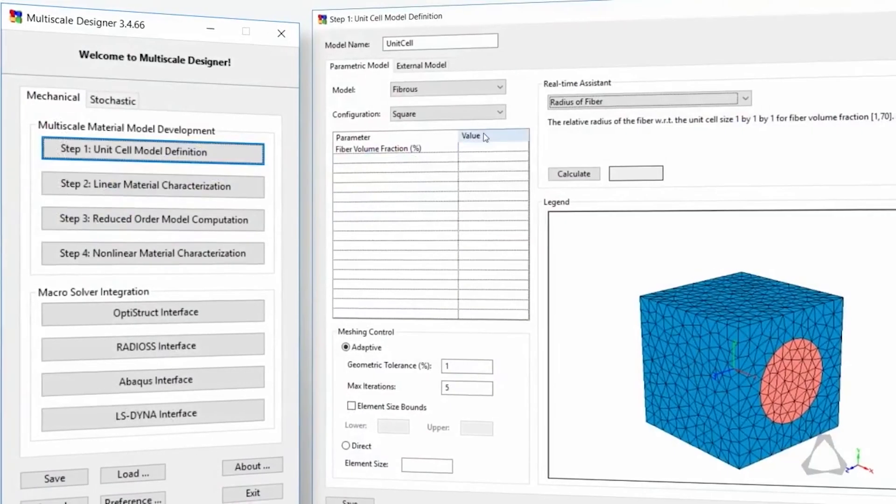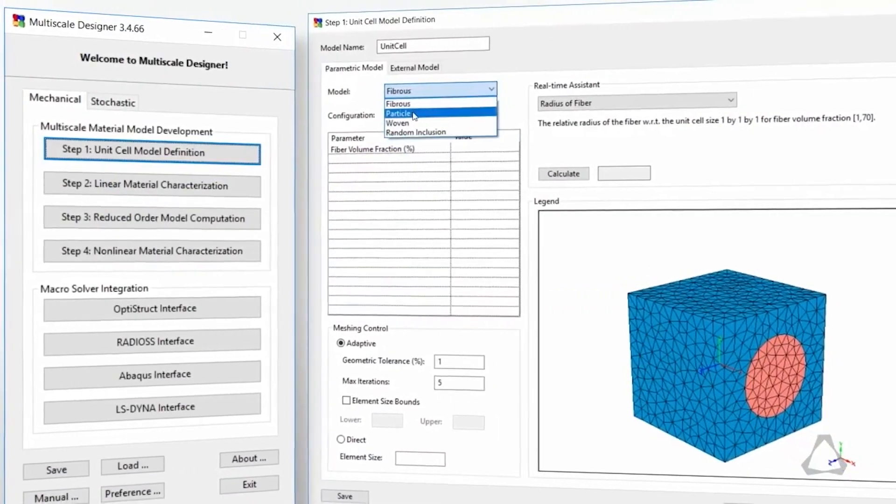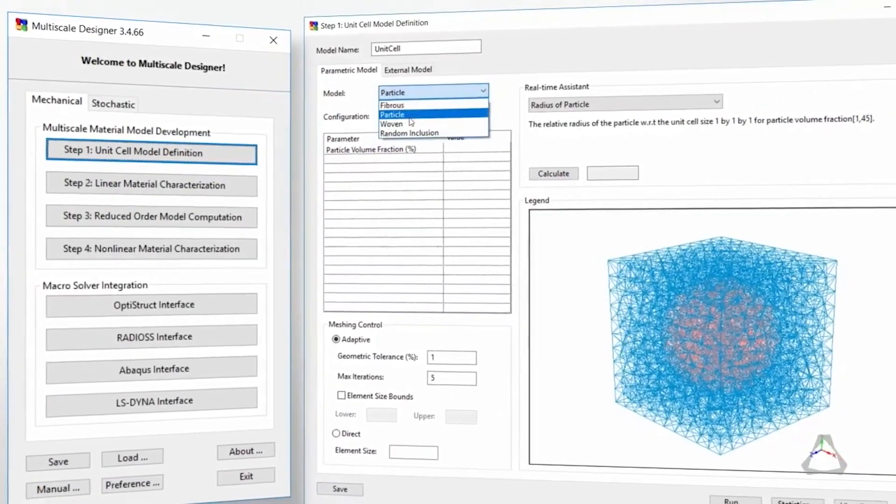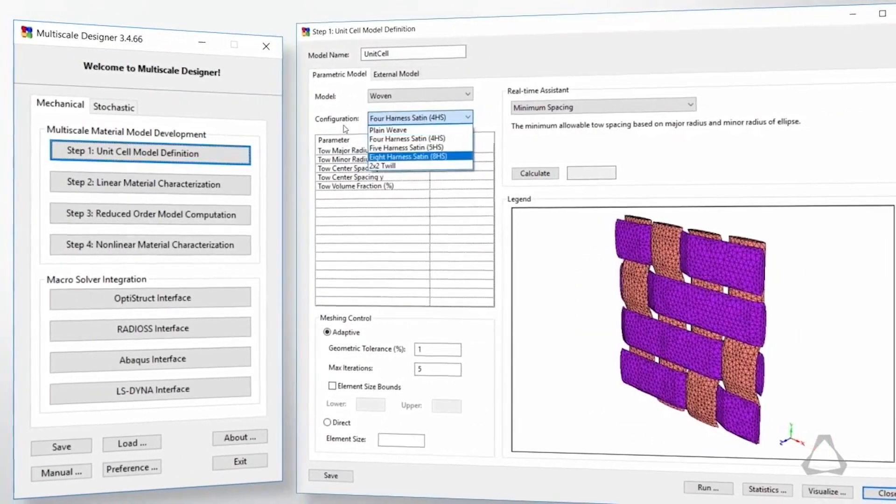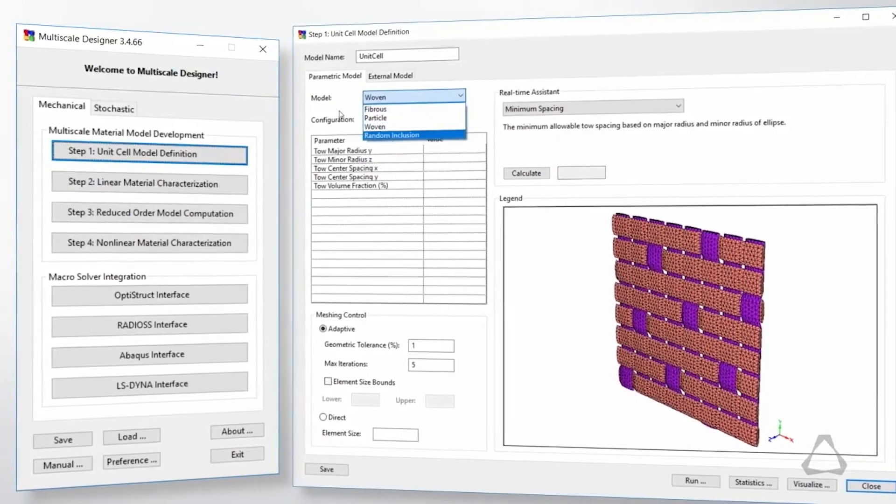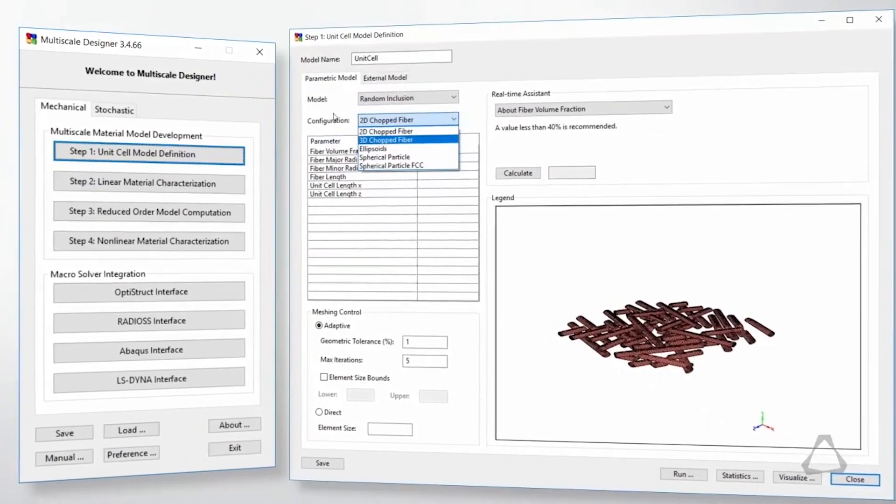From material characterization to laminate design and simulation, HyperWorks provides powerful tools and workflows to ensure the accuracy and reliability of composite structures. Engineers can explore different material orientations, ply thickness, and stacking sequences to optimize composite structures for weight, strength, and performance.